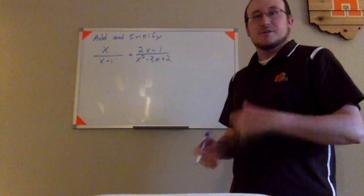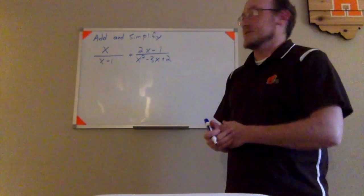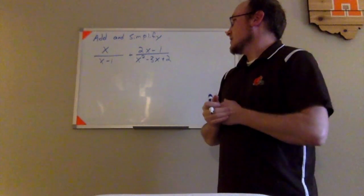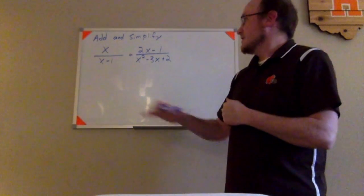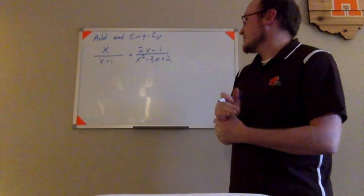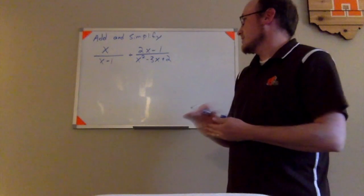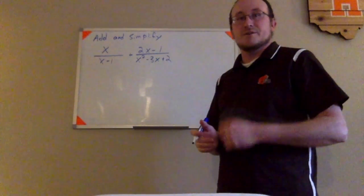Let's take a look at an example that wants us to add two rational expressions together. Here we have a rational expression x over x minus 1. We're trying to add to that the rational expression 2x minus 1 divided by the quadratic trinomial x squared minus 3x plus 2.